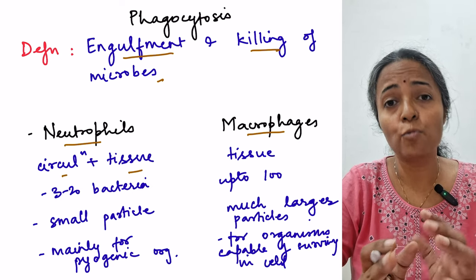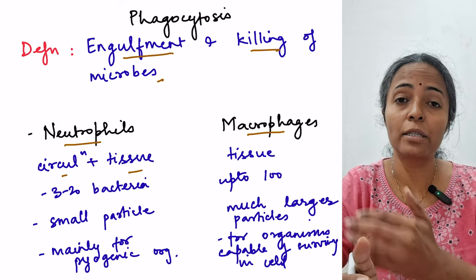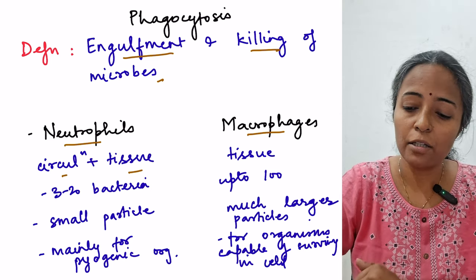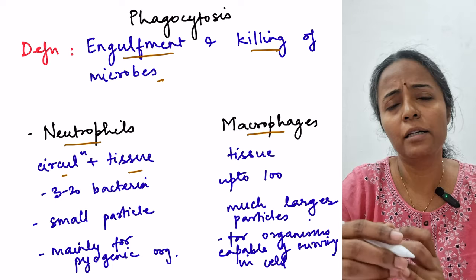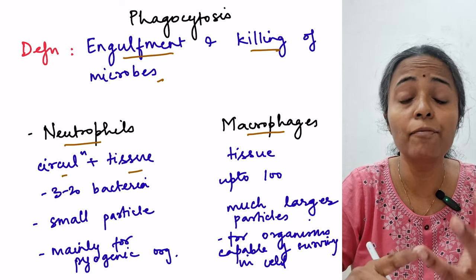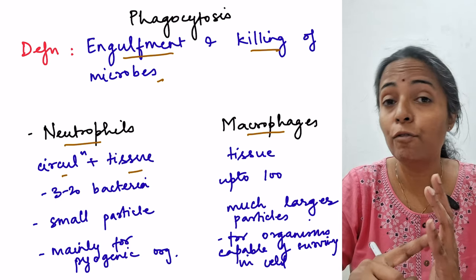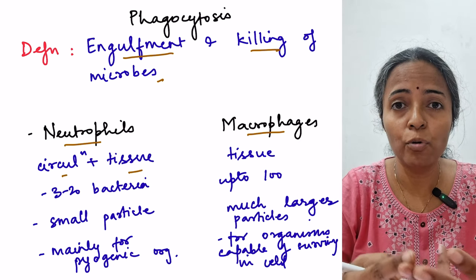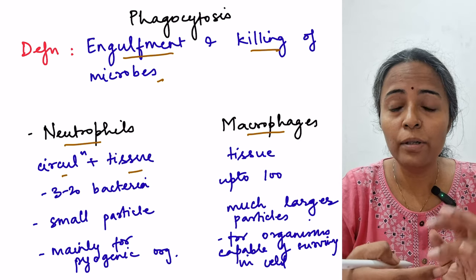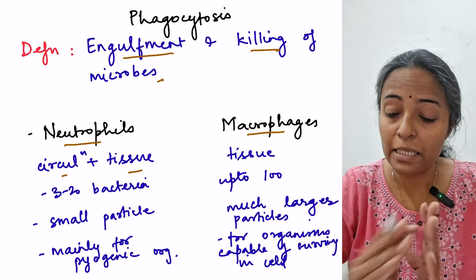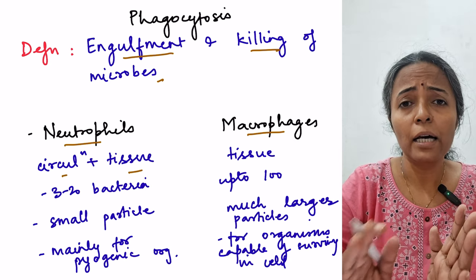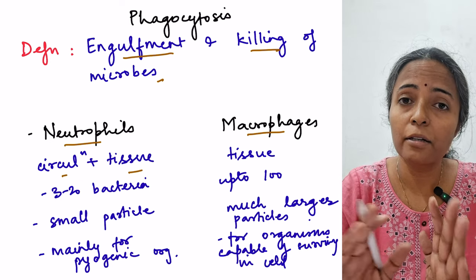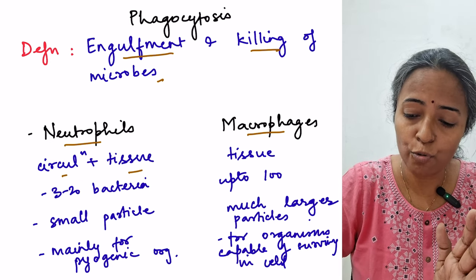Macrophages are the ones residing in the tissues, lining the various tissues. Examples include Kupffer cells in the liver, alveolar macrophages, macrophages lining the spleen and lymph nodes, osteoclasts in bone, and mesangial cells in the kidney. So macrophages are phagocytes mainly in tissues.